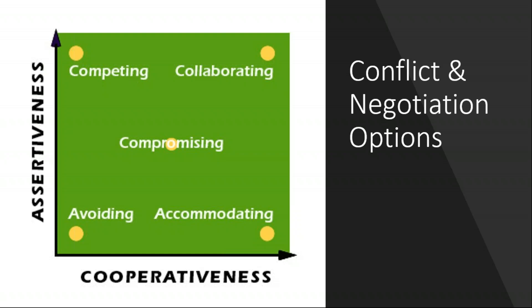In the top right-hand corner is collaboration: high on assertion and high on cooperativeness. When you collaborate with somebody, you're willing to work with and through them on the issues to come up with a resolution you're both happy with — a problem-solving approach to dealing with conflict. One of the big downfalls of collaboration is that it takes a long time, because you've obviously got to have a conversation with the other person to get to a resolution, and we don't always have time.